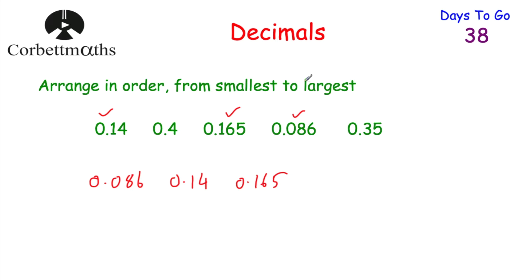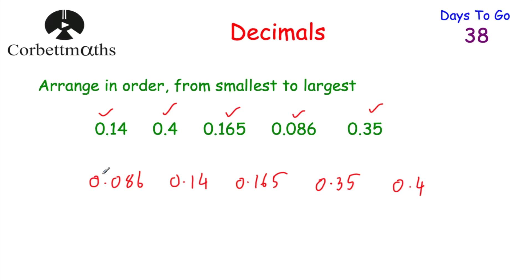Now let's look at our tenths column again — we've got a four and a three. Three is going to be smaller, so that's our next number: 0.35. And then our biggest number is going to be 0.4 because it has a four in the tenths column. So we've put the numbers in order from smallest to largest.